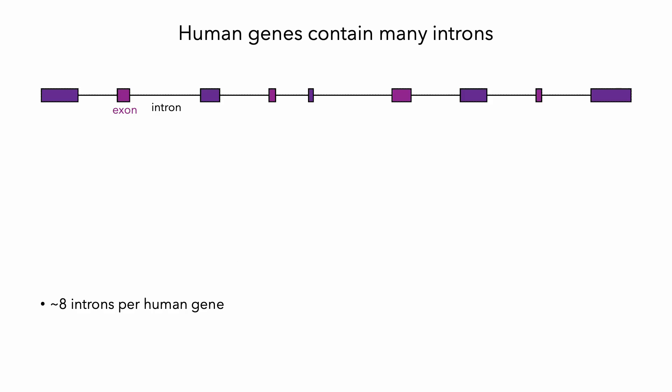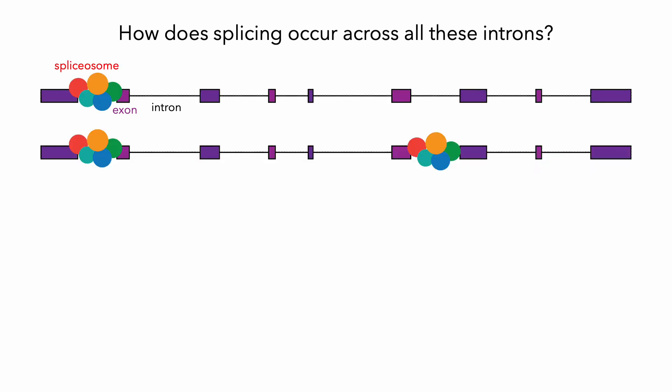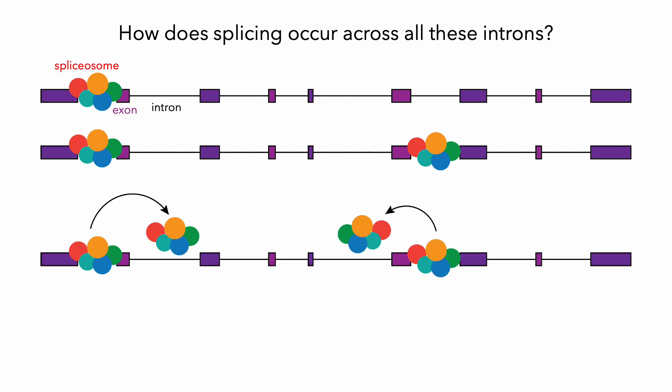Human genes contain on average 8 introns, but this can go up to dozens and even sometimes hundreds. In addition, the large majority of human genes undergo alternative splicing, meaning that their transcripts contain different combinations of introns and exons. So given the abundance of introns and the complexity that arises from alternative splicing, one question that we're really interested in is how splicing occurs across all of these introns and whether removal of one intron influences that of its neighbors.